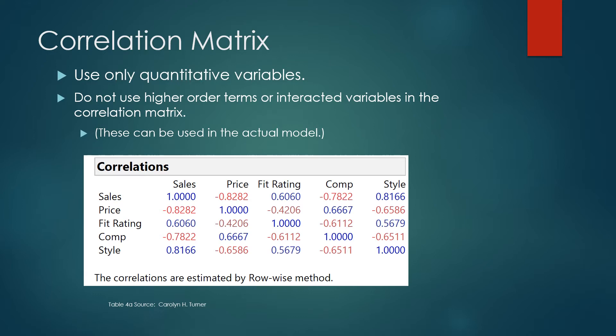We want x and y to be highly correlated, but we do not want the x's to be highly correlated. So looking at the correlation matrix, sales has a strong negative correlation with price. Sales has a moderately strong correlation that's positive with fit. It has a strong negative correlation with competition and a strong positive correlation with style.